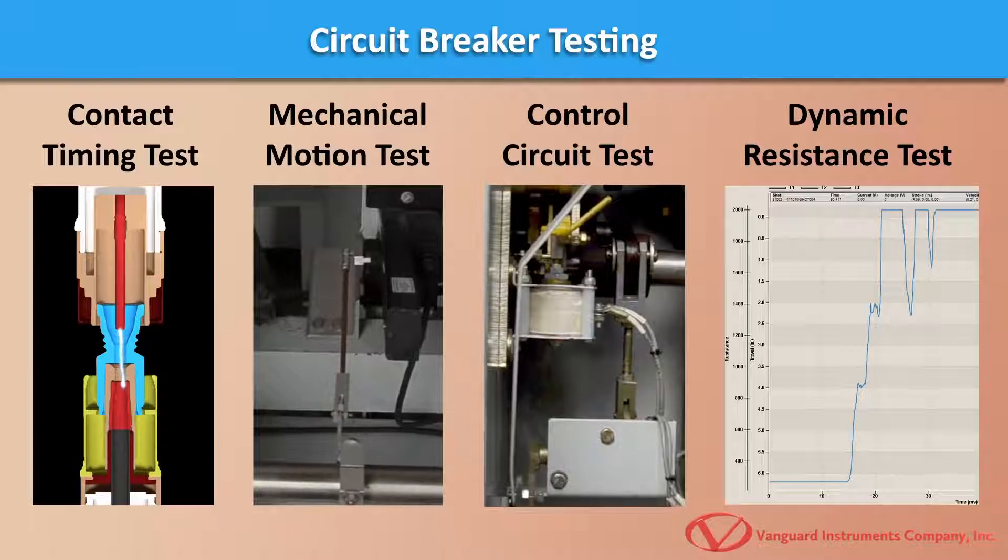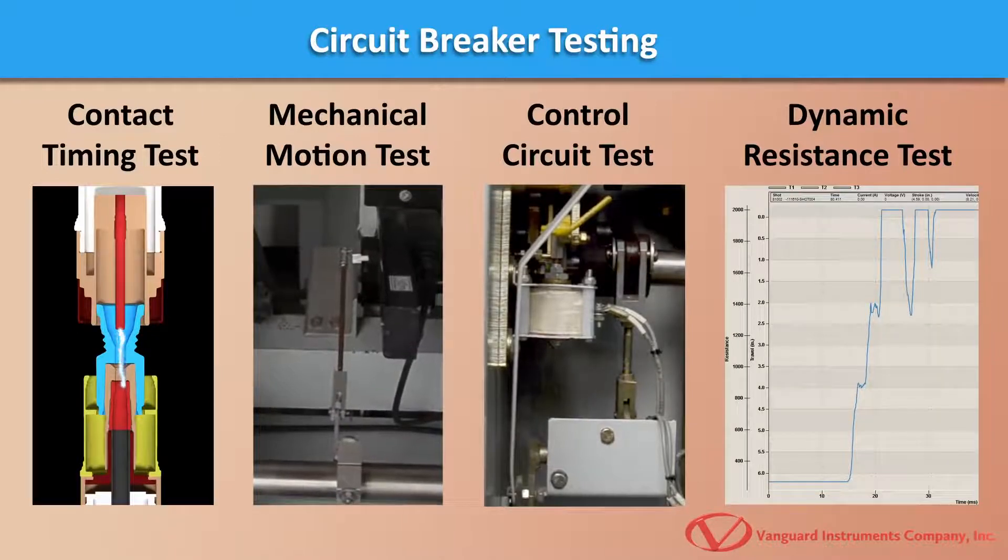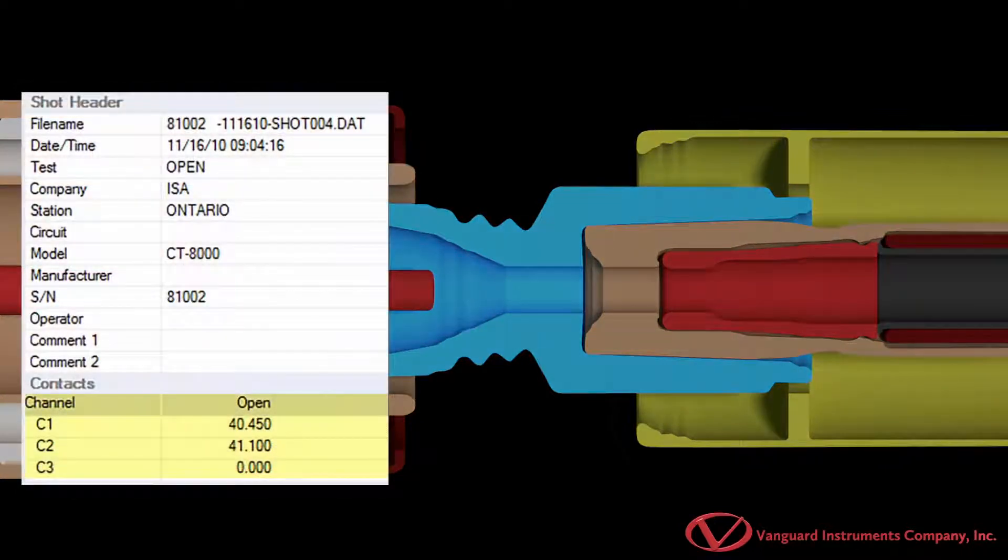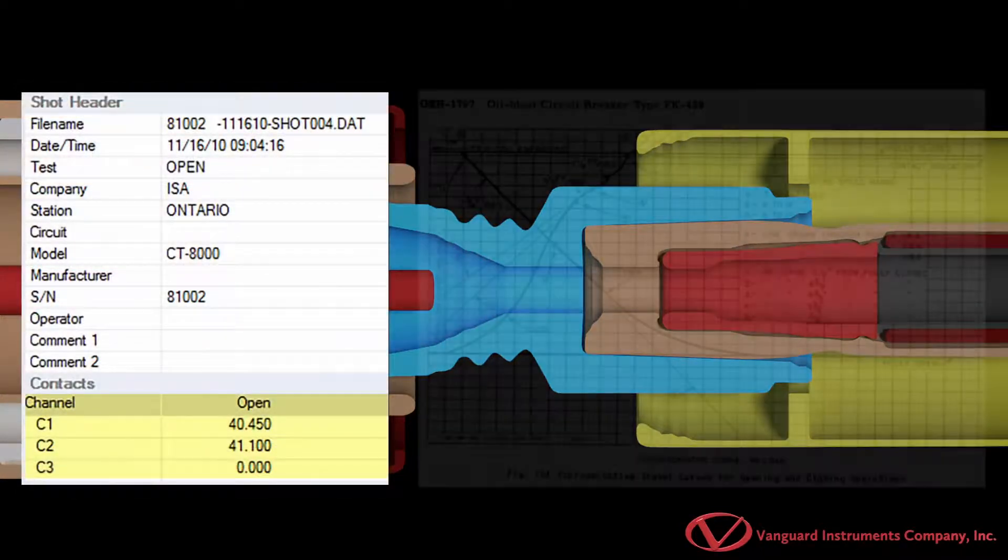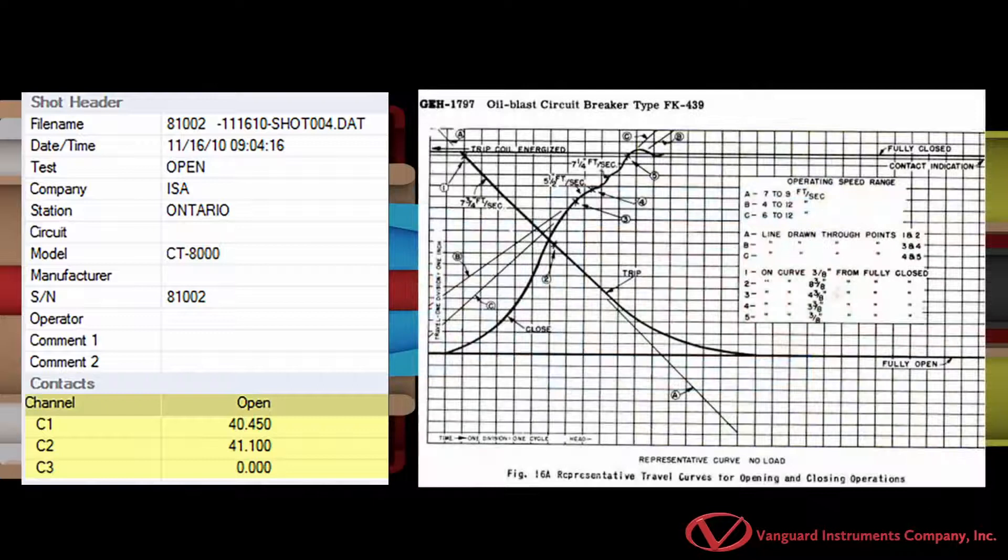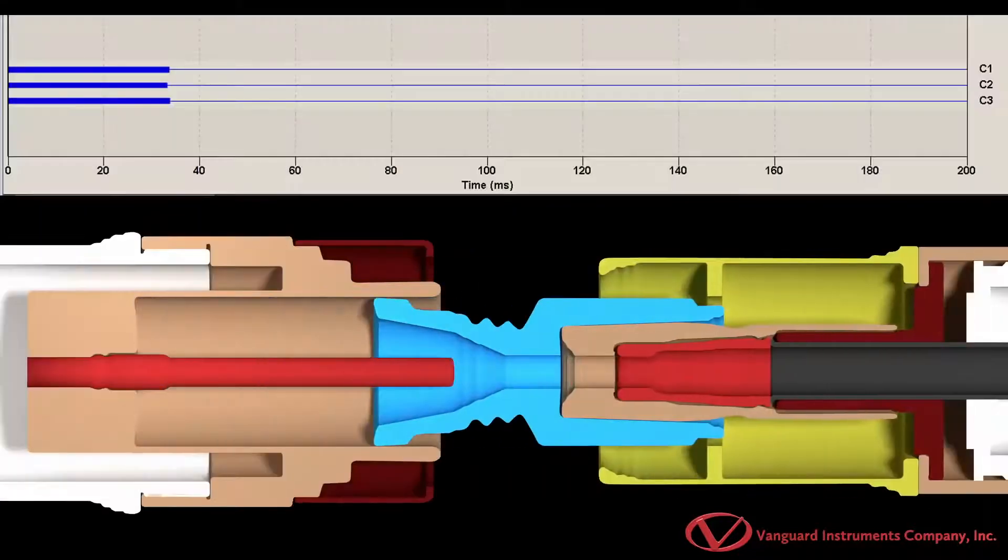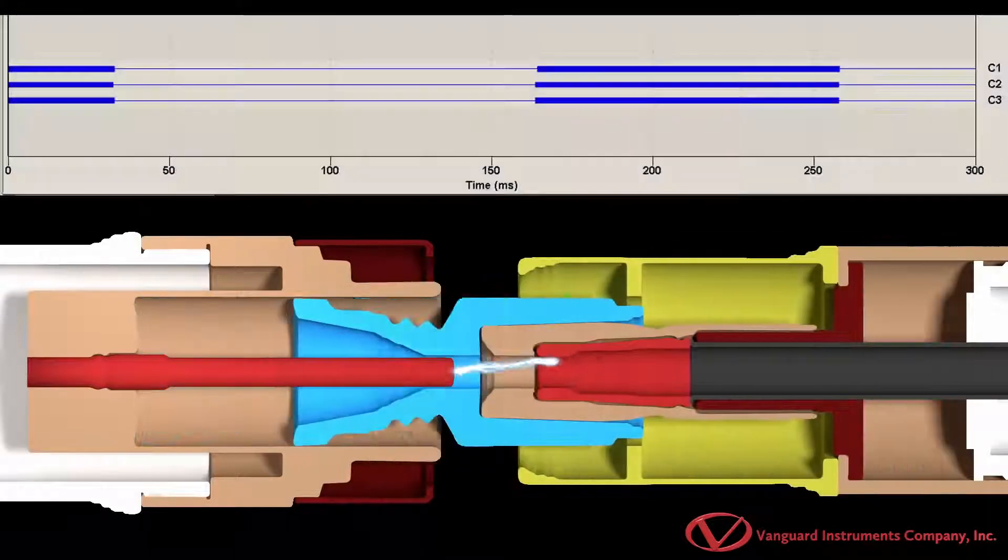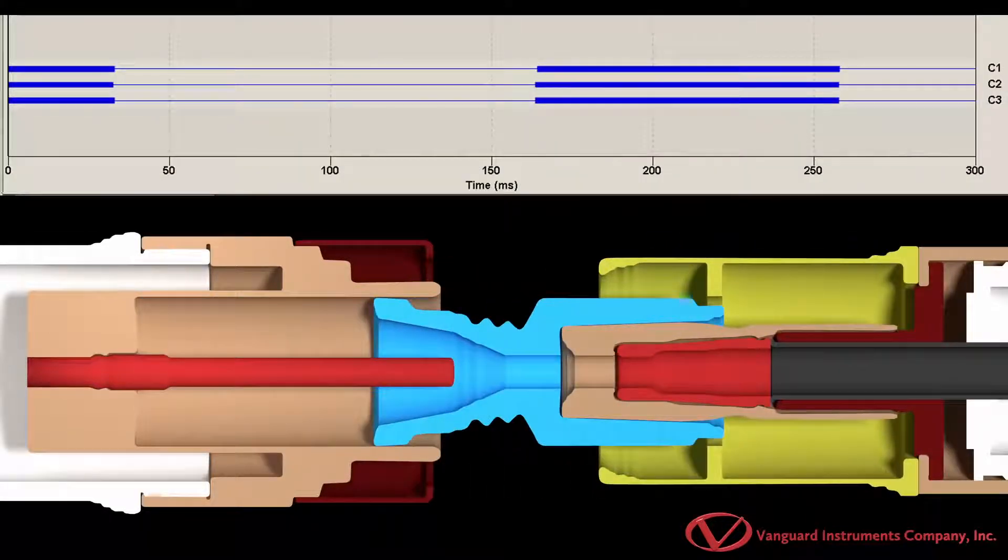Various tests can be performed to evaluate the different components of a circuit breaker. Contact timing tests are used to compare the breaker's main and resistor contact performance against the manufacturer's specifications. The breaker's open, close, open-close, close-open, and open-close-open operations are timed in milliseconds and cycles and compared with the manufacturer's specifications to determine the performance of the breaker.